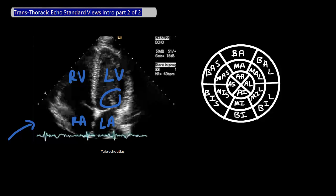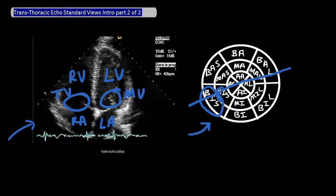You'll also get a good look at the mitral valve as well as the tricuspid valve. Tying this back to the 16 parts of the left ventricle, the angle of the cut you're making across the left ventricle in this view means that you are visualizing these six parts of the left ventricle.